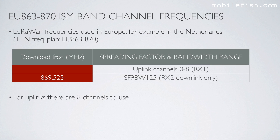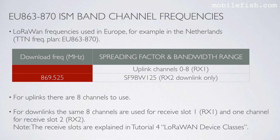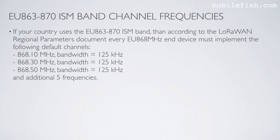To recap: for uplinks there are 8 channels to use. For downlinks, the same 8 channels are used for receive slot 1, and one channel for receive slot 2. The receive slots are explained in tutorial 4 on LoRaWAN device classes. If your country uses the EU863-870 ISM band, then according to the LoRaWAN regional parameters document every EU868 MHz end device must implement the following default channels: 868.1 MHz, 868.3 MHz, and 868.5 MHz — all three using the 125 KHz bandwidth.